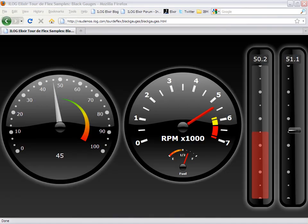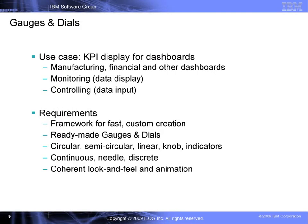Let's have a look at the gauges. The use cases that drove their development were business intelligence, reporting displays, and business dashboards, both for data display and data input scenarios. It ships with 21 ready-made gauges, integrated with FlexBuilder for easy drag-and-drop grid creation. A key value of Elixir gauges is their framework — it makes custom gauge creation a breeze.